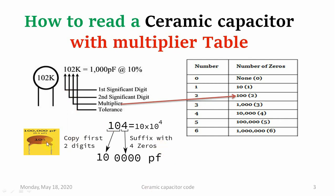For example, consider capacitor 104. We write the first and second digits as they are, and the third digit is the multiplier value. The digit 4 indicates we have to append four zeros after the first and second significant digits, and that turns out to be 1 lakh picofarad. So 104 means 1 lakh picofarad.